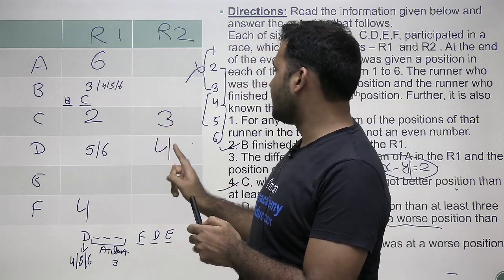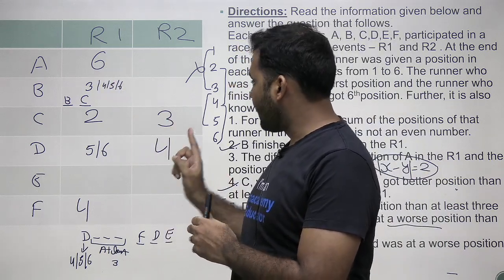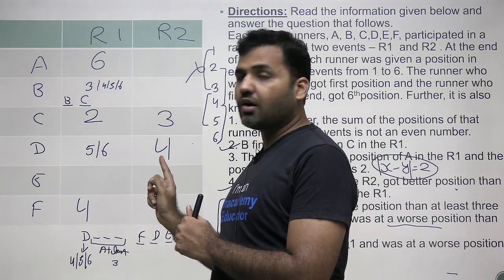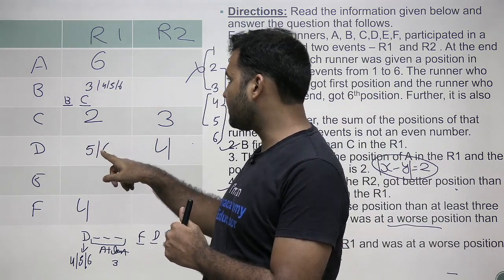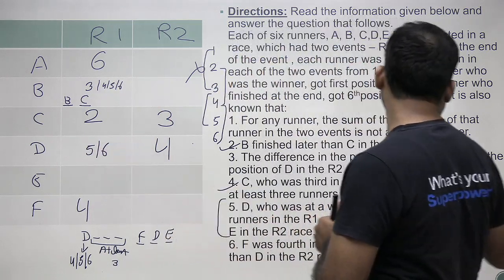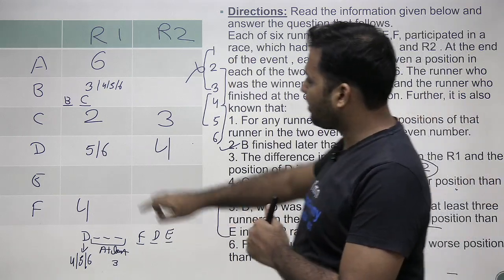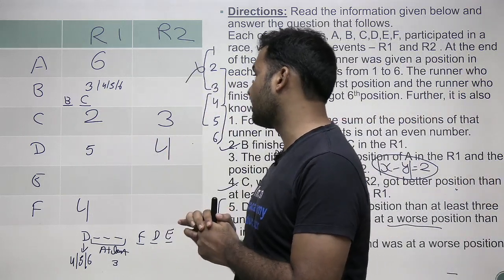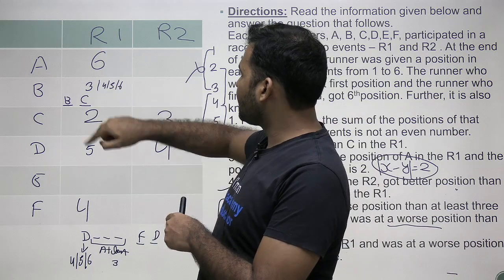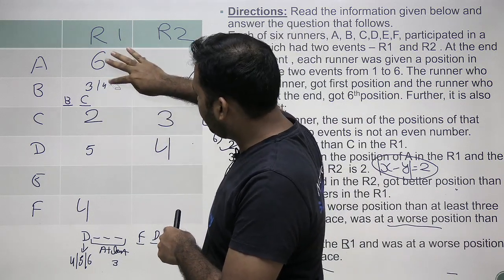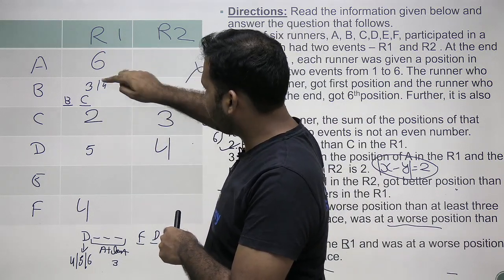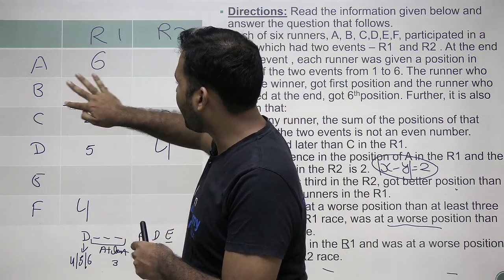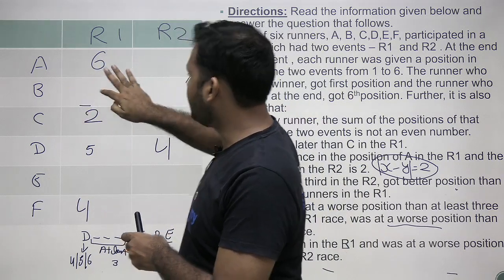With A=6 in R1 and D=4 in R2, F's rank in R2 must be worse than D's rank of 4. F cannot be rank 6 in R2 because 6 plus 4 equals 10 — even. So F's R2 rank is 5. Now for B's rank in R1: ranks 2, 4, 5, and 6 are used. B must finish after C, so B's rank must be greater than 2. The only option remaining is rank 3.